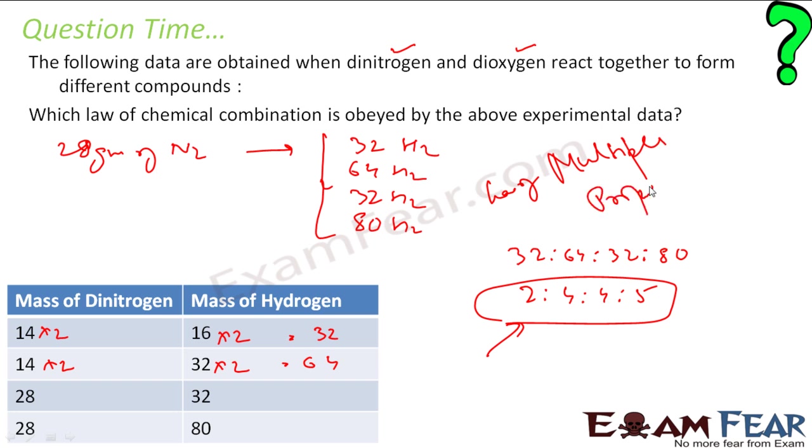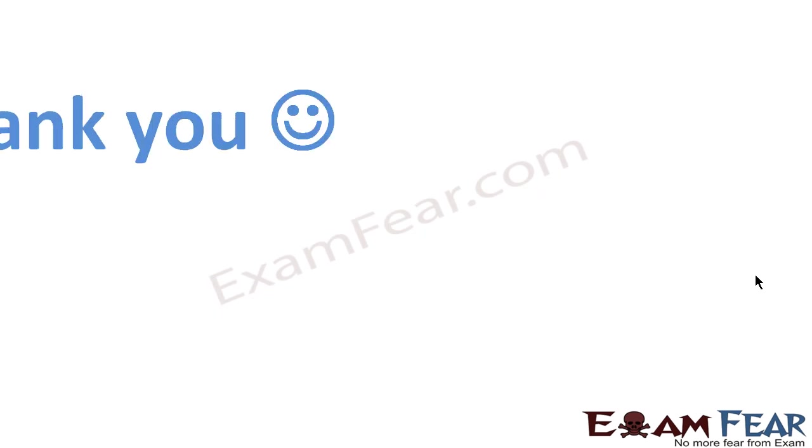So you say that if one particular thing is constant, in this case my nitrogen is constant at 28 grams, you see the mass of hydrogen required to produce different kinds of compounds, different kinds of compounds are formed. And the mass of hydrogen required are in whole number ratio. Thank you.